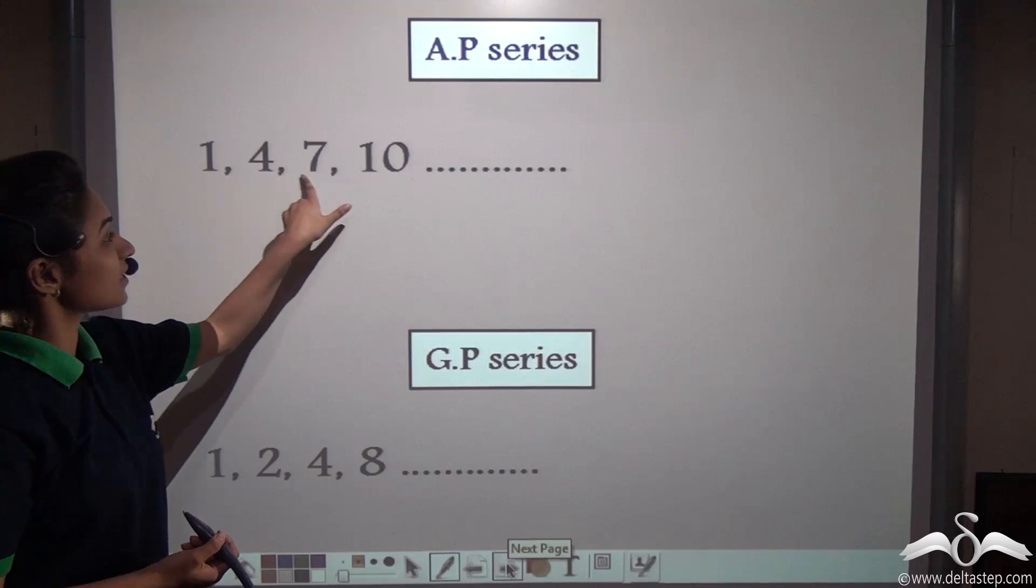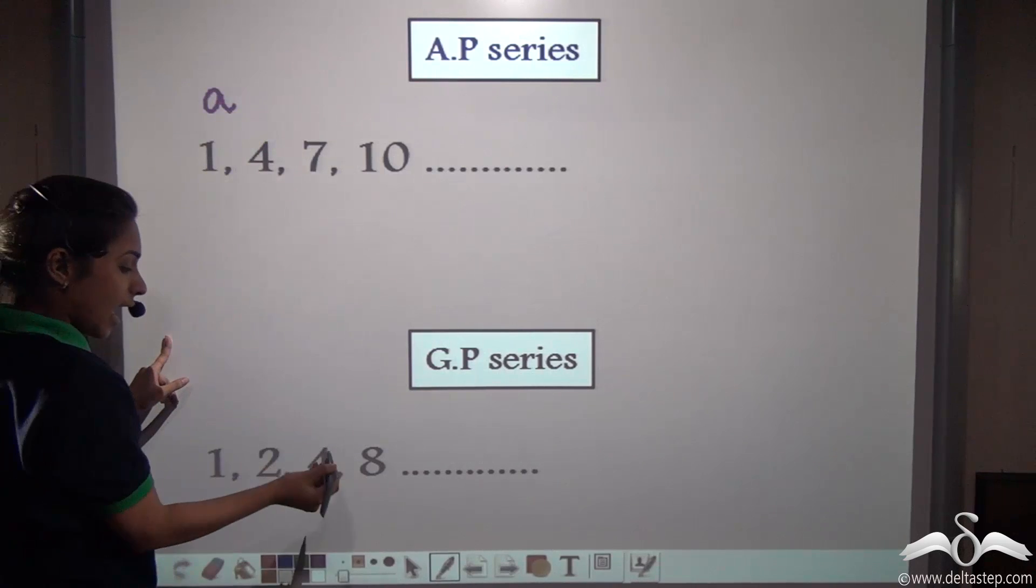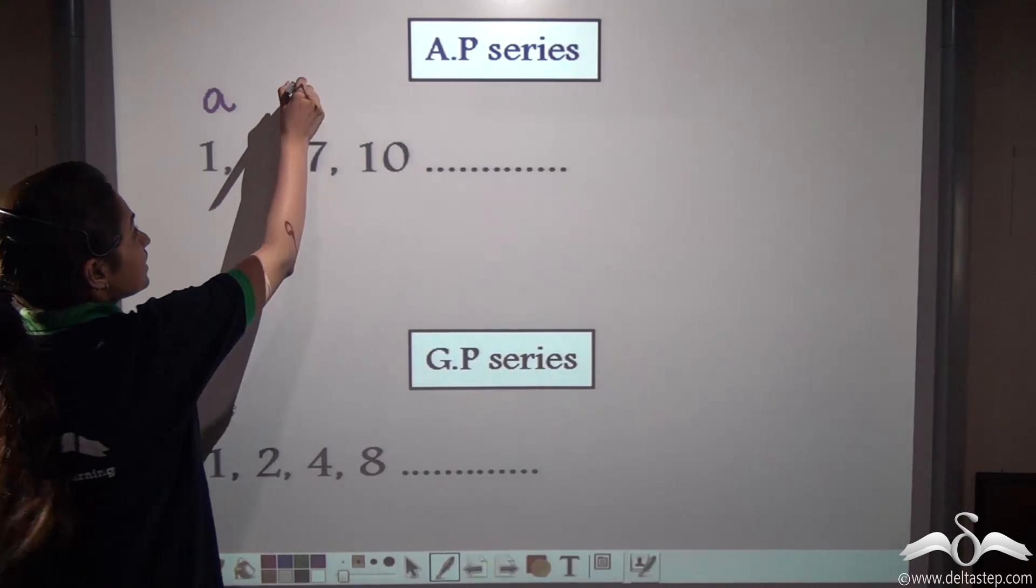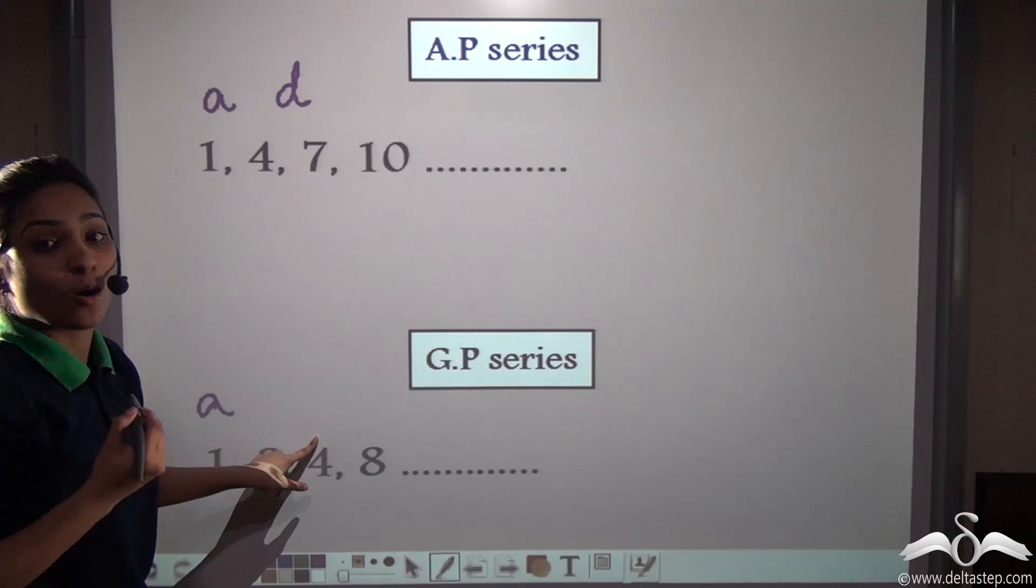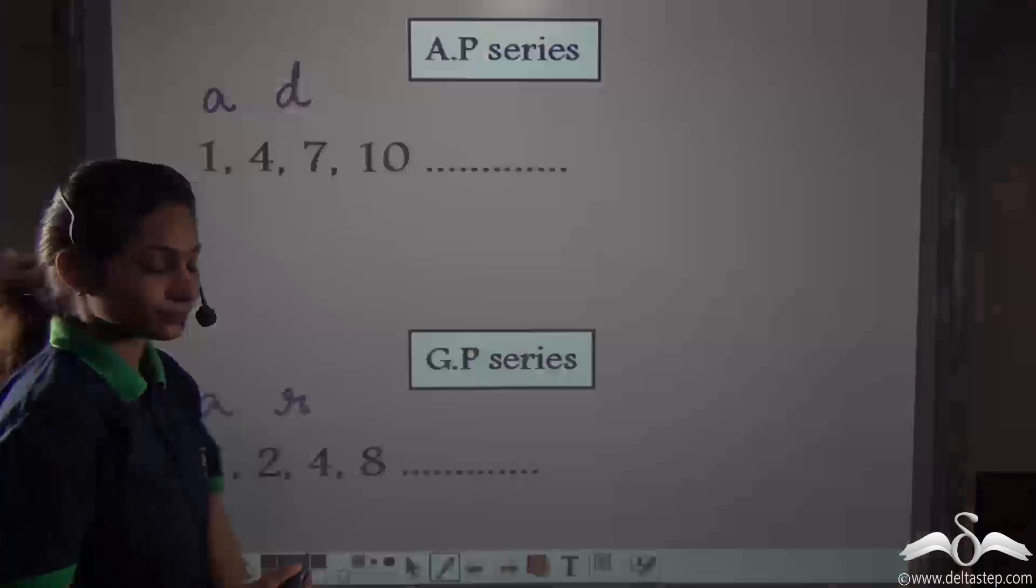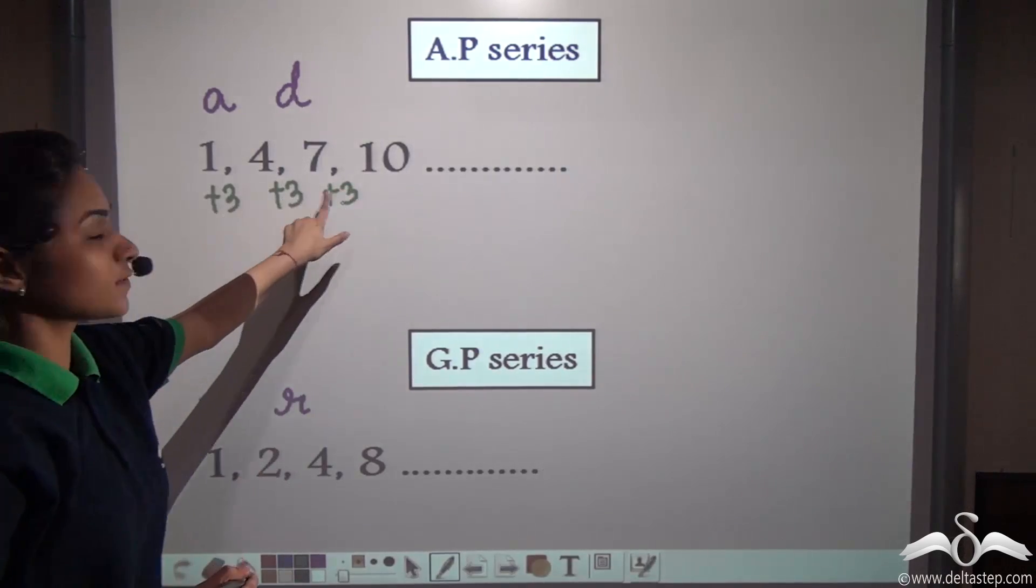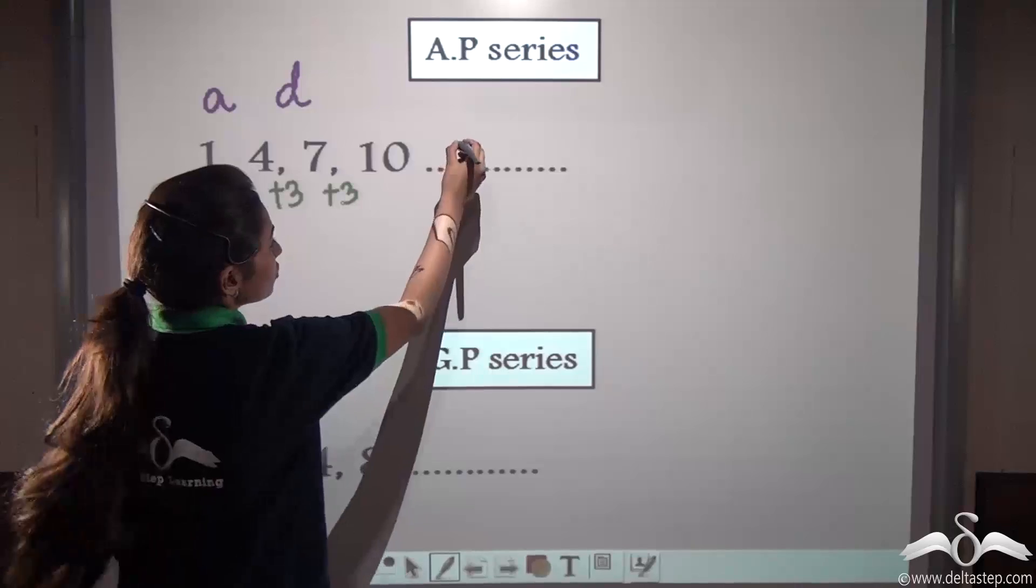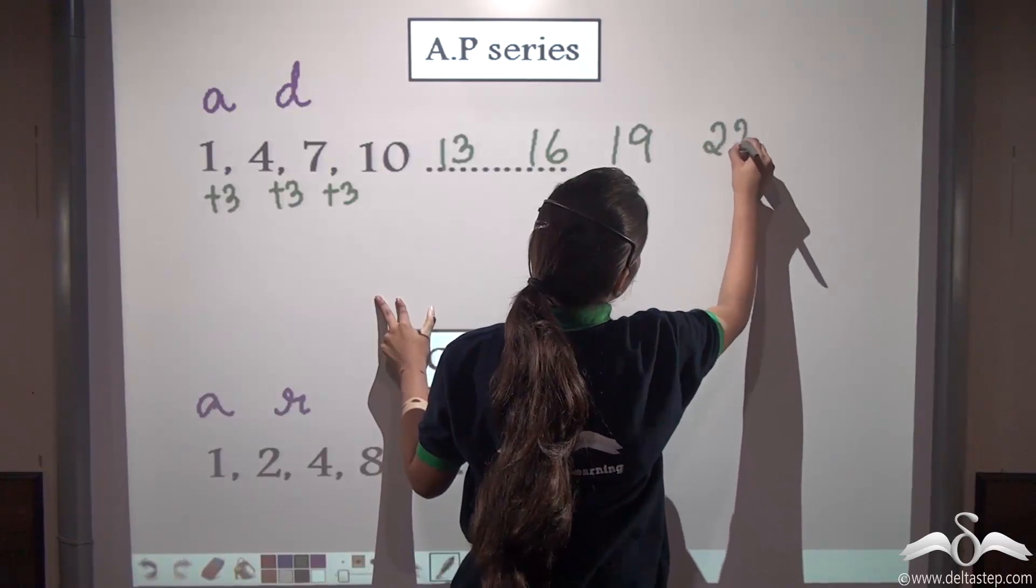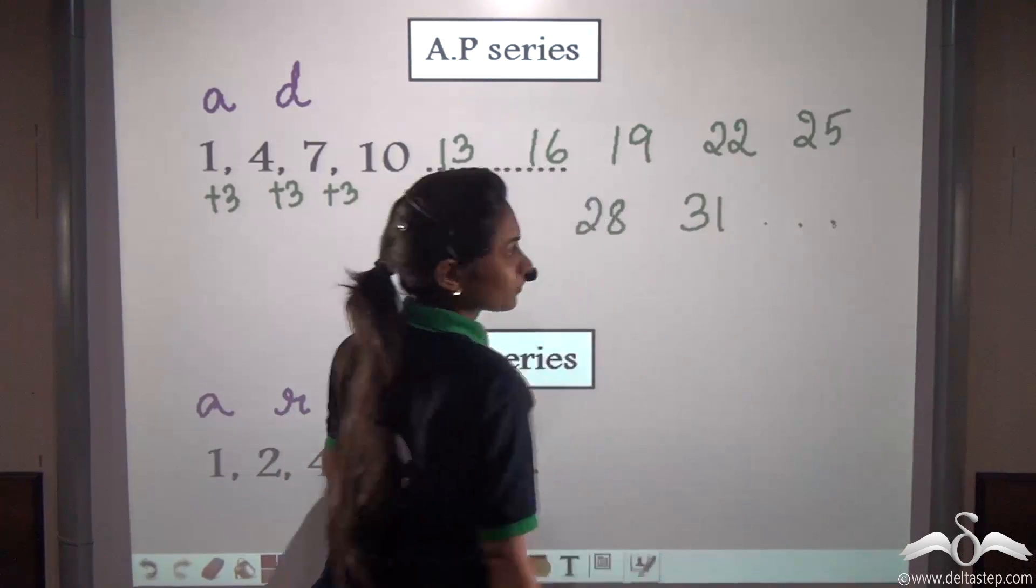Look at it. Can you tell me whether this is an AP series or not? What is the common difference here? Remember, the first term here is called A and the first term here in GP series, it is also called A. Here the common difference we call it as D and here the common difference is not so, we have a common ratio which is known as R. Right? Can you tell me some terms of this AP series? You can see that the common difference here is 3. You can see this is constant. So let us write some terms after it. It will come to 13, 16, 19, 22, 25 and let us write some more 28, 31 and so on.